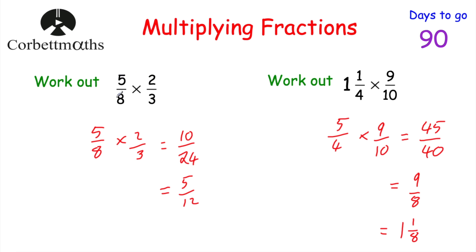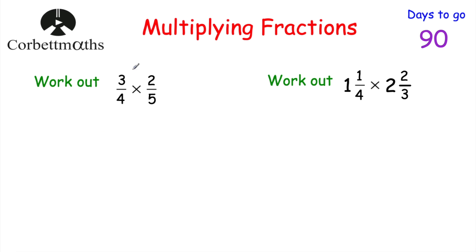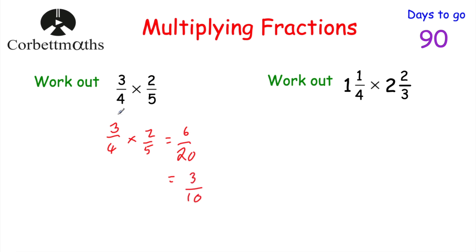So that's how we multiply fractions: multiply the numerators and multiply the denominators, and cancel down if you can. For mixed numbers, make them top-heavy first, then do the same technique. Here's something for you to try yourself — pause the video and give these questions a go. For the first one: multiply the numerators, three times two is six; multiply the denominators, four times five is 20. We've got six twentieths, which can be cancelled down — dividing both by two gives three tenths. So three quarters multiplied by two fifths equals three tenths.